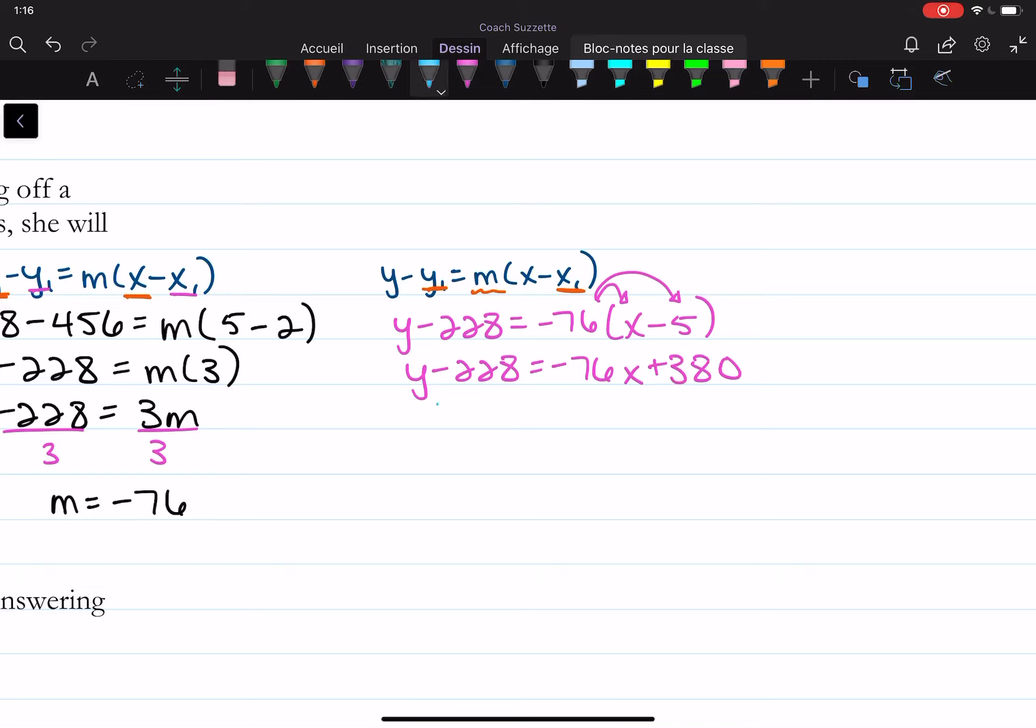Isolating y plus 228 plus 228. y is equal to negative 76x. And then what is 380 plus 228? 608. So the original amount owed $608.